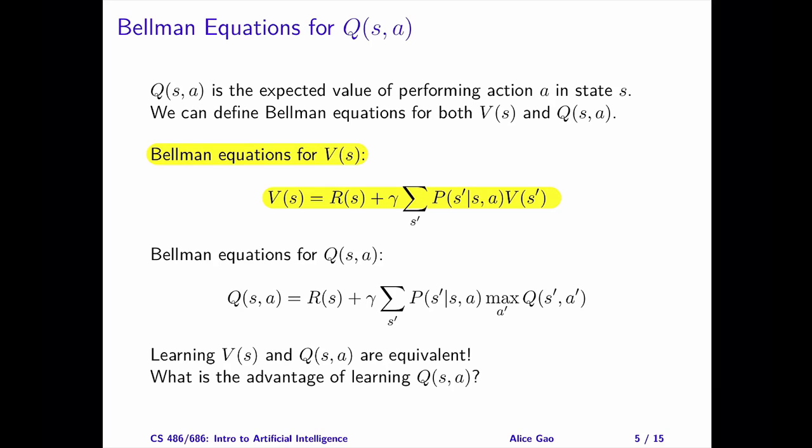There's a related quantity called the Q values. Q gives the agent's expected utility of performing action A in state S. V and Q are closely related, and we can define them recursively in terms of each other.